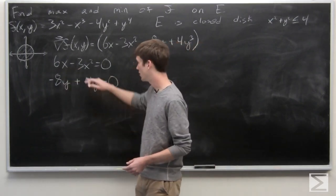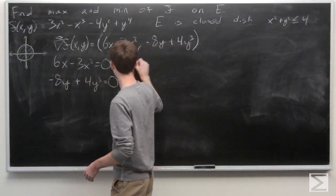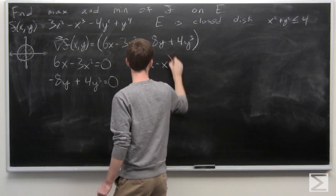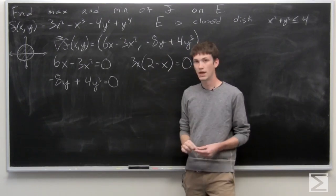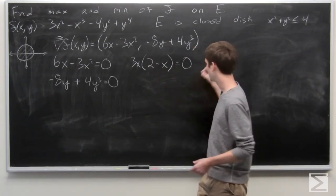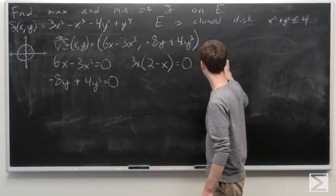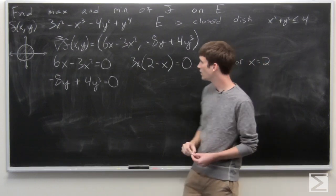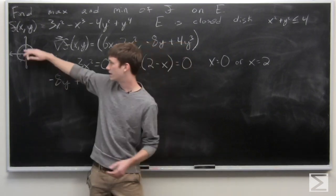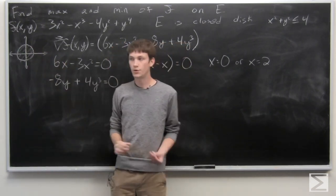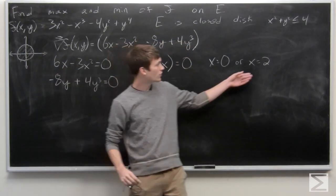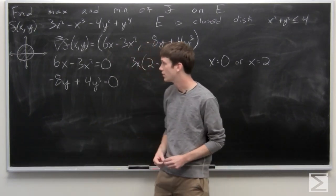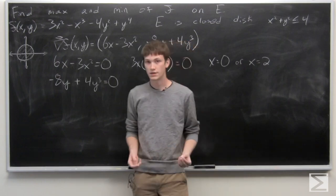Factoring out 3x from the first equation, we see that x equals zero or x equals 2. But x equals 2 is on the boundary, so it will show up again during boundary analysis. So we'll just look at when x is equal to zero for the interior.